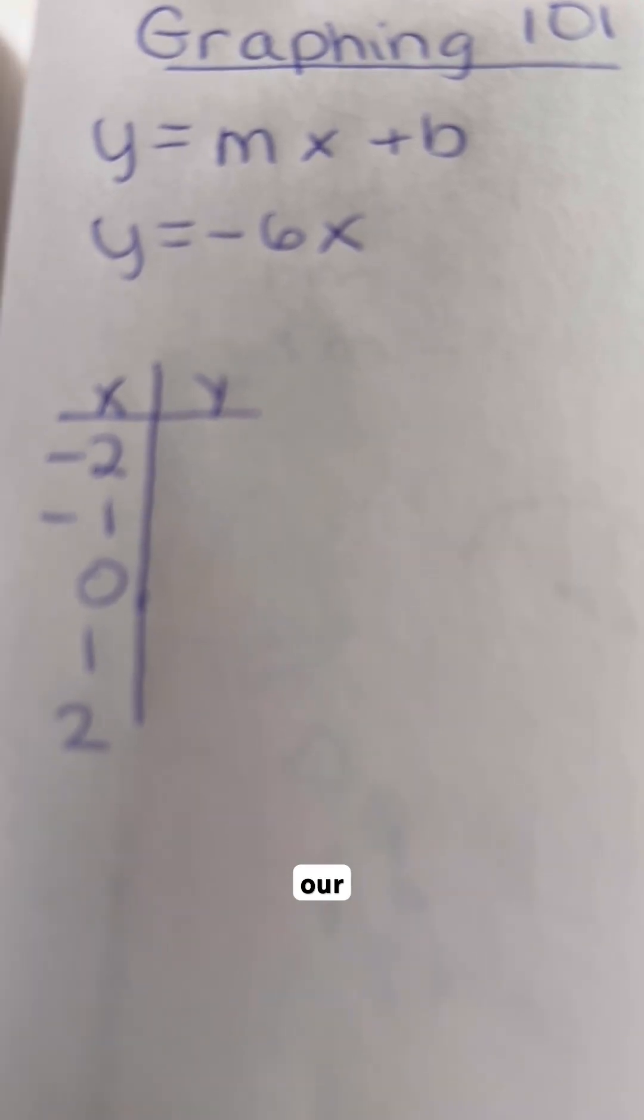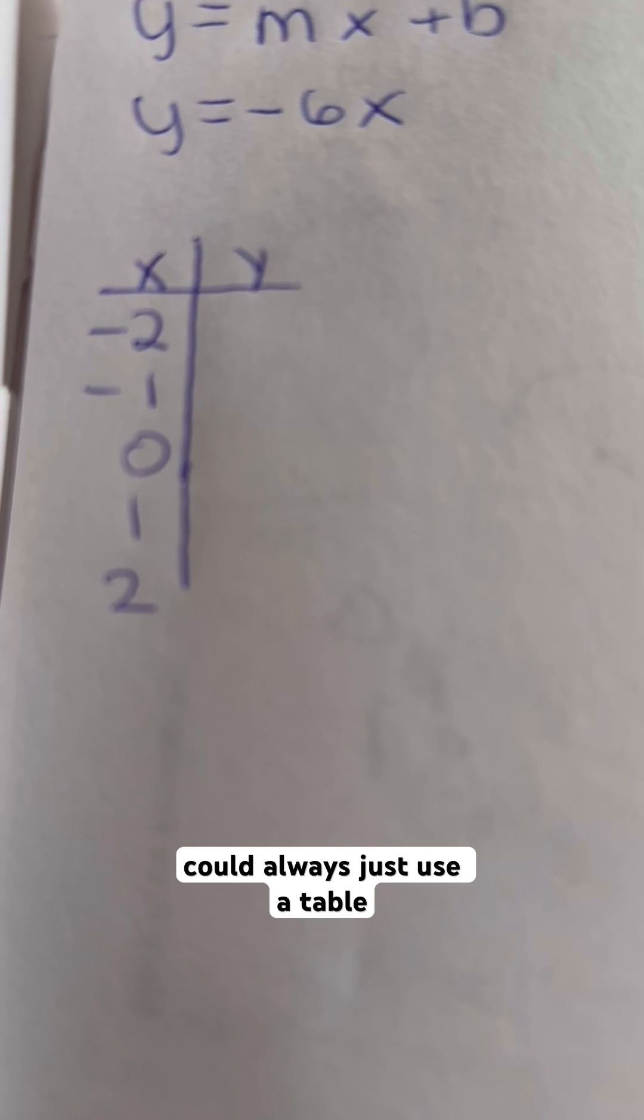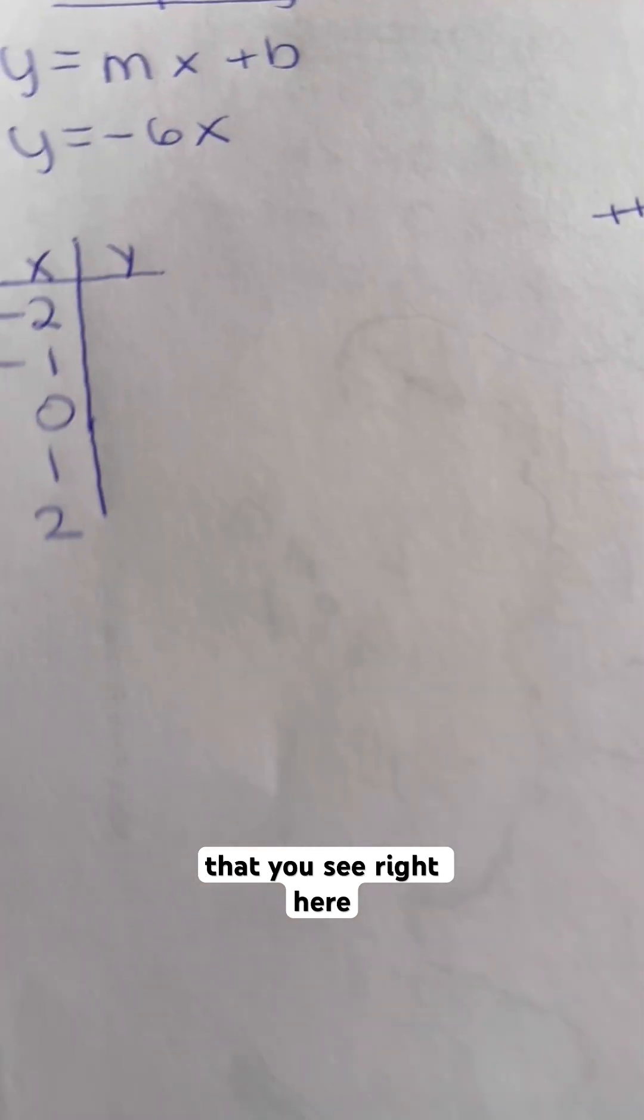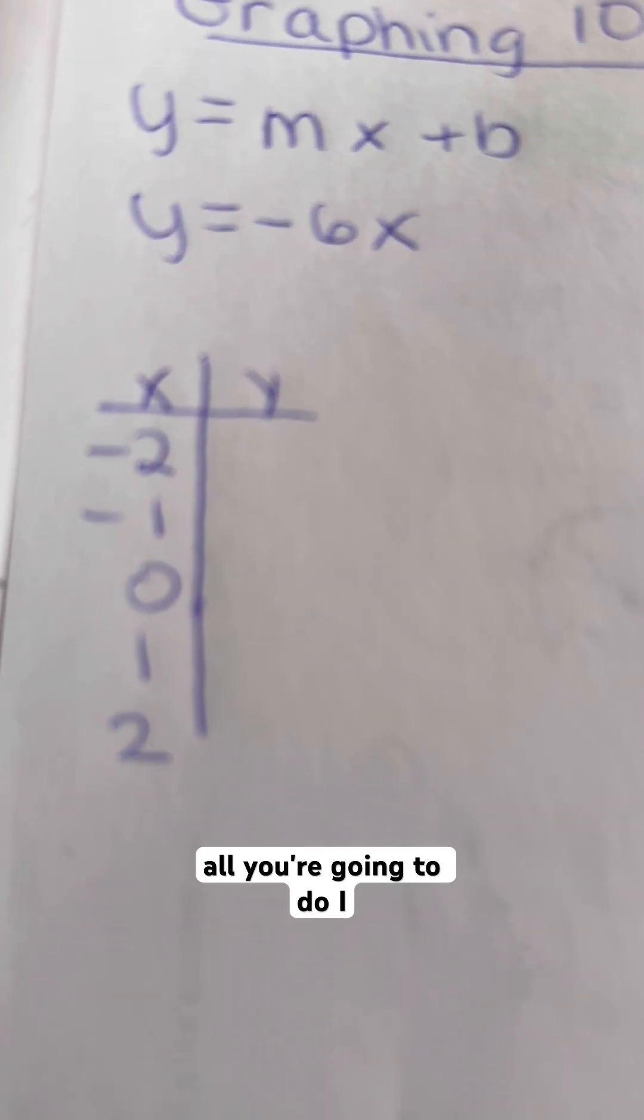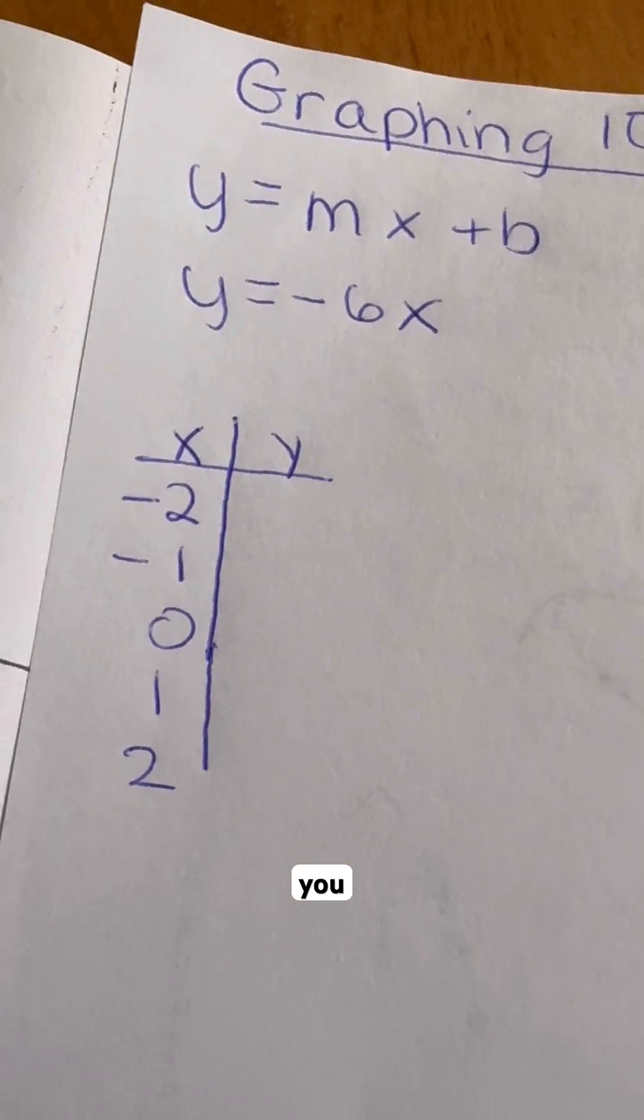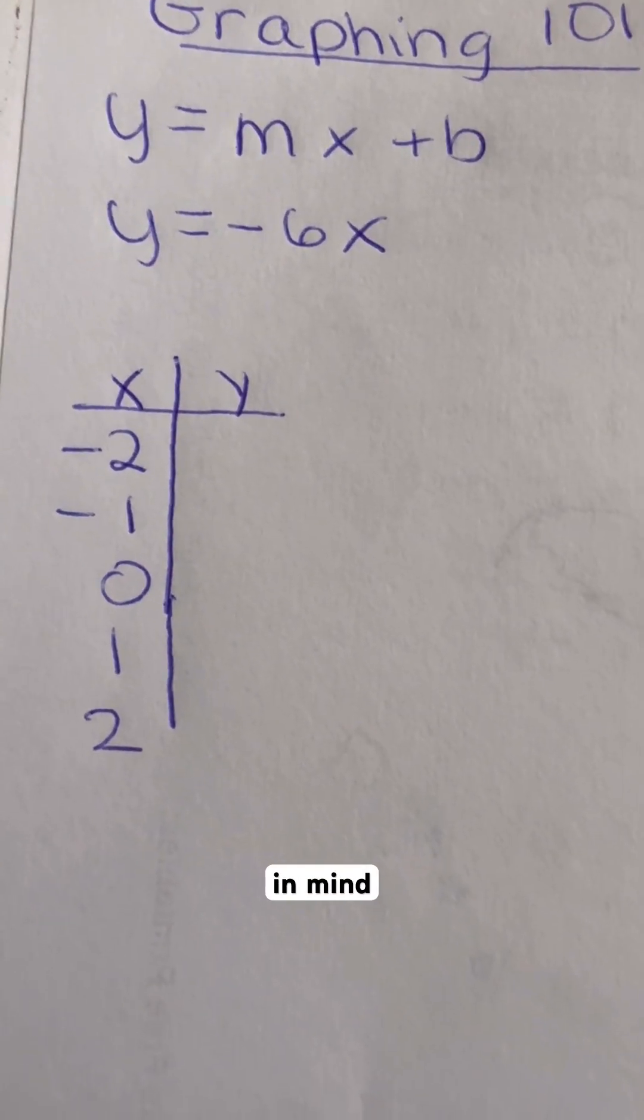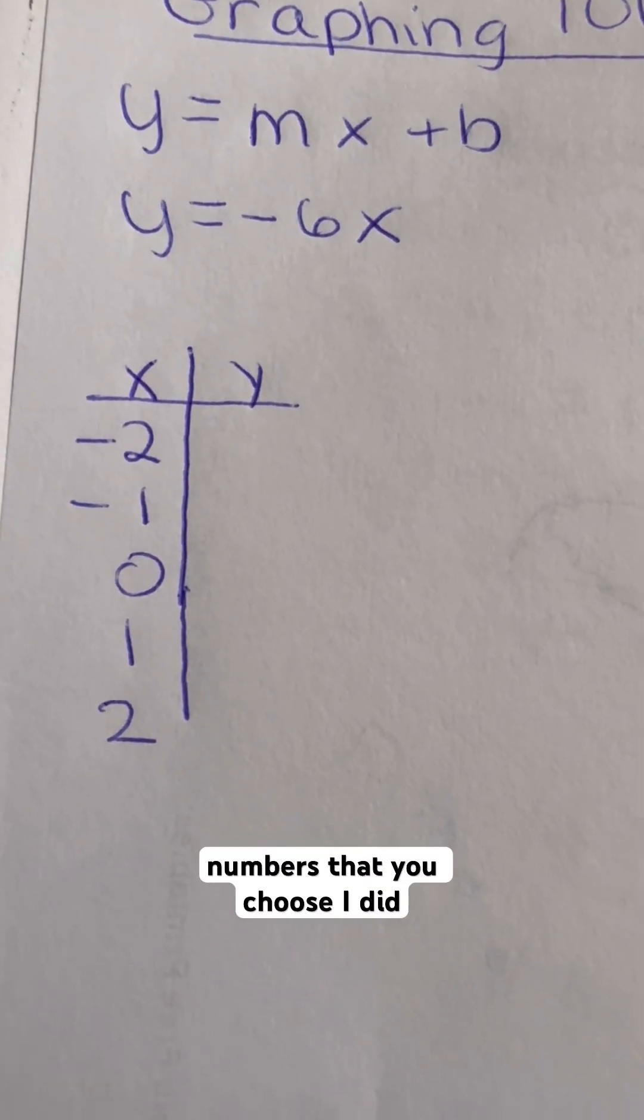This is our way of doing this without knowing how to graph. You could always just use a table that you see right here. Basically all you're going to do is just pick some random points. You don't have to have any specific points in mind. Just pick any random numbers that you choose.